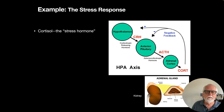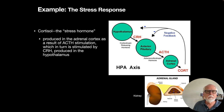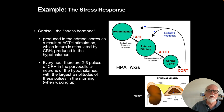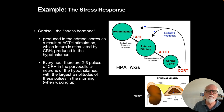Cortisol is sometimes dubbed the stress hormone. If you can measure cortisol, you can use it as an index of how stressed a person is — it's produced in the adrenal cortex as a result of ACTH stimulation, which was stimulated by CRH from the hypothalamus. Every hour there are about two to three pulses of CRH released by the paraventricular neurons of the hypothalamus, and the largest pulse happens in the morning when you're waking up — your body's way of saying, 'wake up, get things going.'